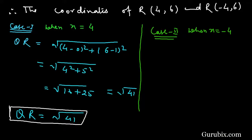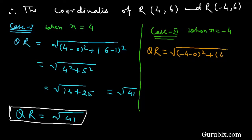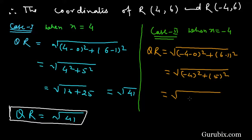In Case 2, when x = -4, QR = √[(-4 - 0)² + (6 - 1)²] = √[(-4)² + 5²] = √[16 + 25] = √41. Therefore QR = √41 in both cases.